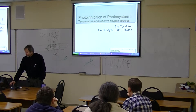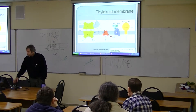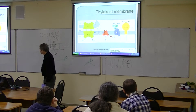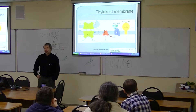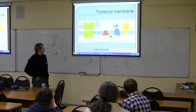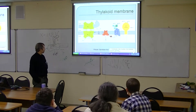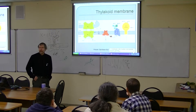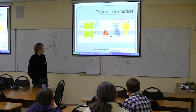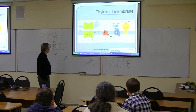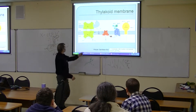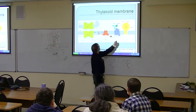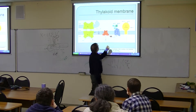There is the thylakoid membrane — just to have the first slide for those who might not be studying photosynthesis — and then we have photo-inhibition of photosystem 2 and photo-inhibition of photosystem 1.